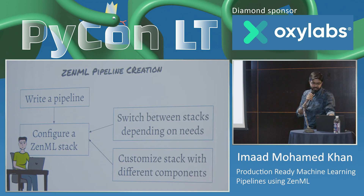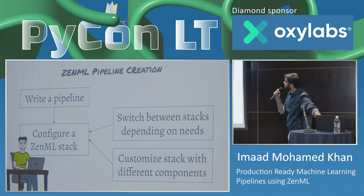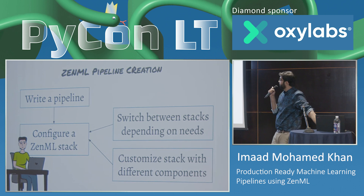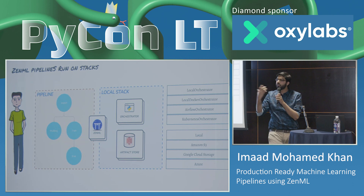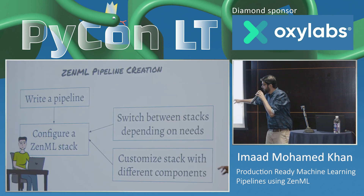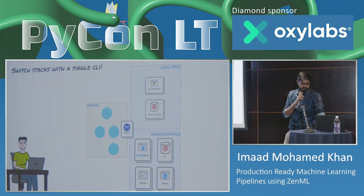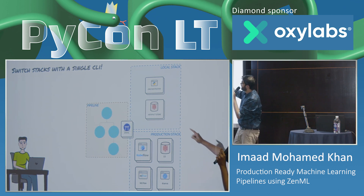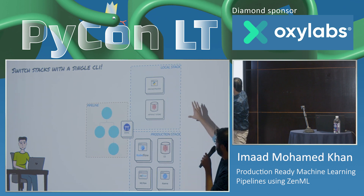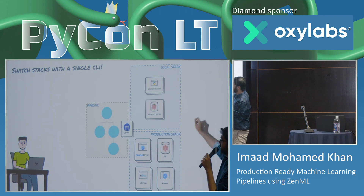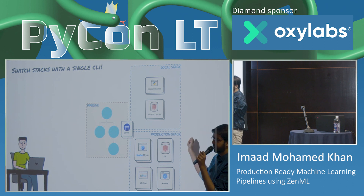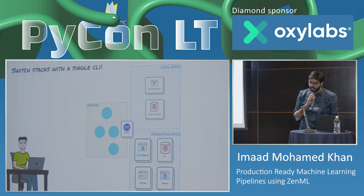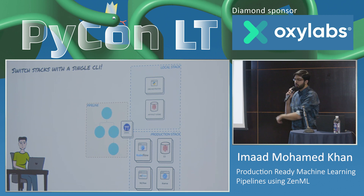How does a pipeline get created? You write a pipeline by configuring a variety of different steps, configure a ZenML stack, and switch between stacks depending on need — you can have many different combinations giving you different kinds of stacks. You can switch between stacks with just a single line command. You can say this is my local stack or this is my production stack. While you're working, keep everything on your local stack; when you want to deploy, just move everything to the production stack. That is how you can quickly work, iterate, and evolve your machine learning pipelines.